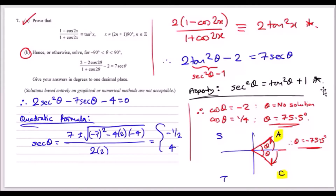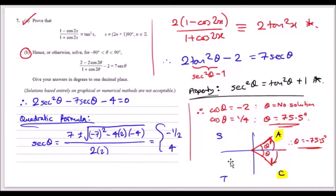Using sec²θ equals tan²θ plus 1, rearranging and substituting, I expanded, collected terms, and formed a quadratic equation in sec. I used the quadratic formula — safer than factorising — and got secθ equals minus half and 4. Converting sec to cos: 1 over cosθ equals these two values, so cosθ equals minus 2 and 0.25. The first gives no solution because cosine only ranges between minus 1 and 1. The second gives inverse cos of 0.25 equals 75.5 degrees.